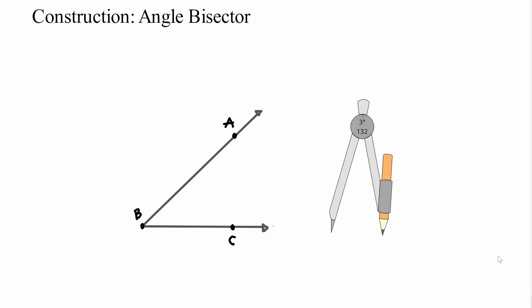Now let's talk about the idea of an angle bisector. How can we construct an angle bisector? We've been given angle ABC. What we want to do is construct some line that cuts this angle in half. There are really just three steps.